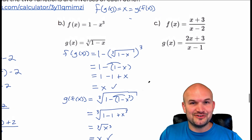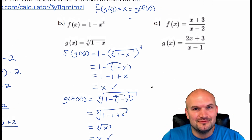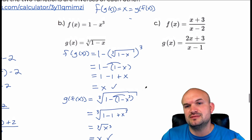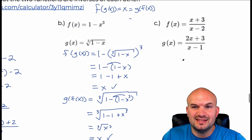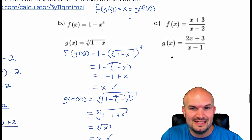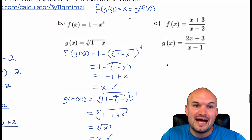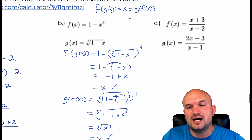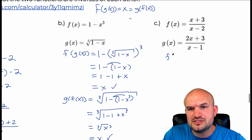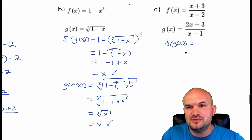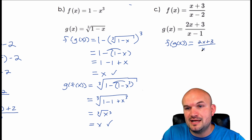Now let's have some fun with rational functions. We'll end up with a complex fraction, which we'll discuss more later in this course — but this is a good lead-in. So let's work on the first composition, f of g of x. It doesn't matter which one you do first. I'm going to plug my g of x function, which is 2x plus 3 divided by x minus 1, and then add 3, all over 2x plus 3 divided by x minus 1 minus 2.